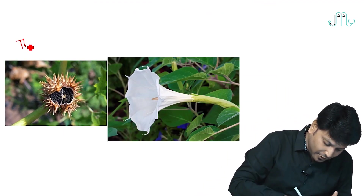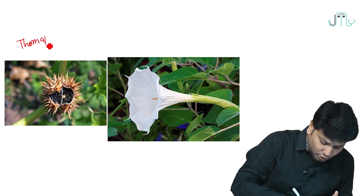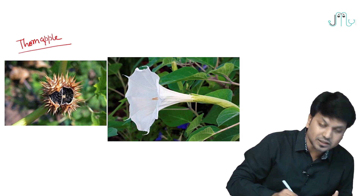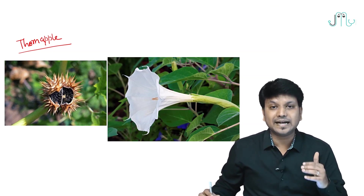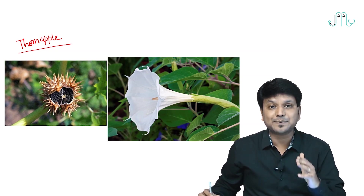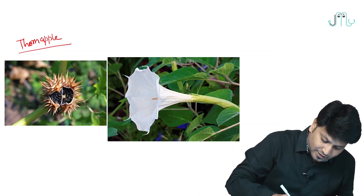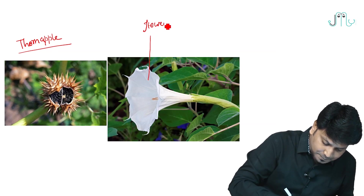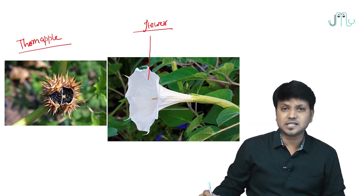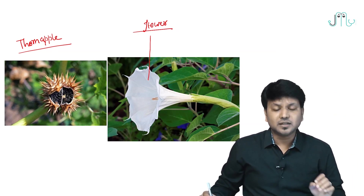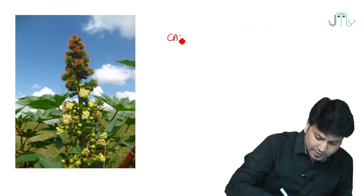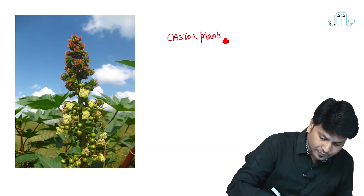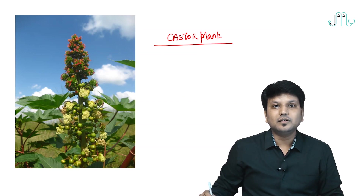You can see the thorn apple and also the brown-colored Datura seed. Sometimes they can ask: Datura seed resembles which seed? Datura seed resembles capsicum seeds. This is the white-colored flower of Datura — we have many species: Datura alba, Datura niger. This white-colored flower indicates Datura alba species.